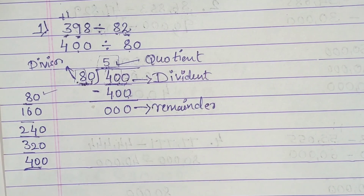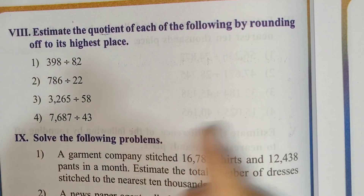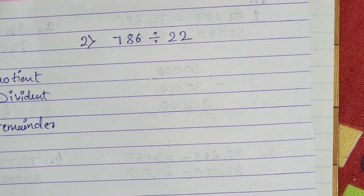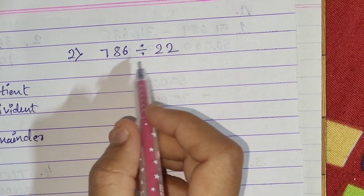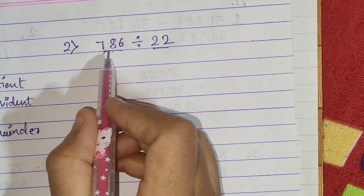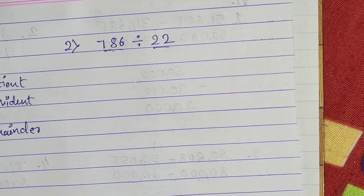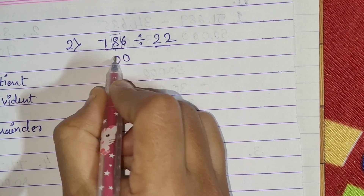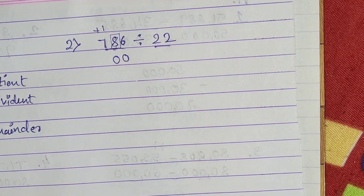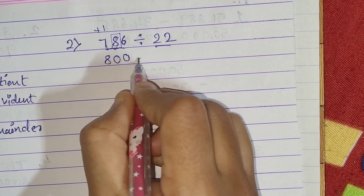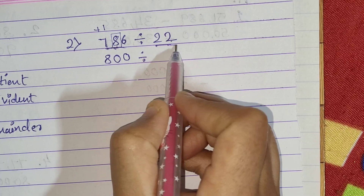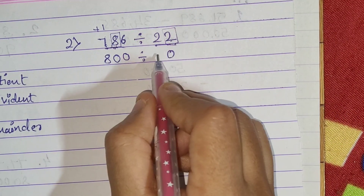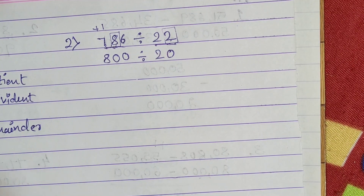So 5 is your estimated quotient. Now let's move to the next example: 786 divided by 22. First we round off both numbers to the highest place. For 786, the highest place is hundreds. The tens digit is 8, so we replace units and tens by zero and add 1 to hundreds: 7 plus 1 is 8, giving us 800. For 22, the units digit is 2, so we keep the tens unchanged and replace units by zero, giving us 20.